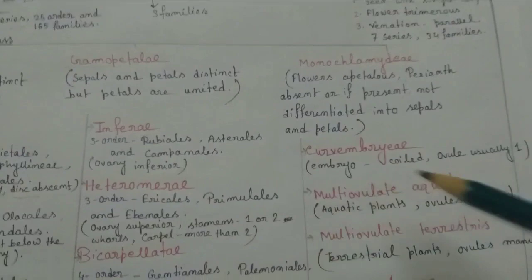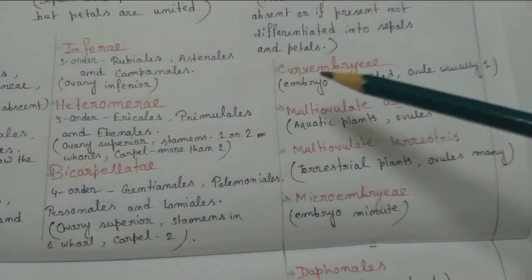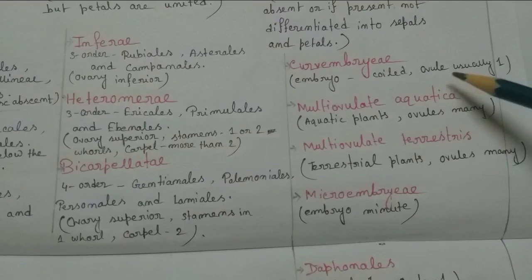Now we come to the subclass Monochlamydeae. Monochlamydeae is divided into eight series. First, Curvembryeae. Their character: embryo coiled and ovule number is one.